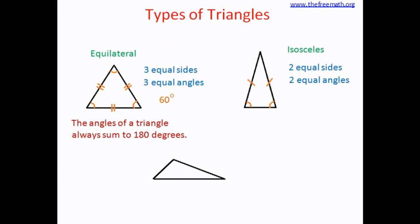Now let's look at the third triangle. You can see that there are no equal sides, and when there are no equal sides there are not going to be any equal angles. Such kind of triangle is called a scalene triangle. Scalene triangles do not have any equal sides or any equal angles. These types of triangles tell us how many sides are equal.